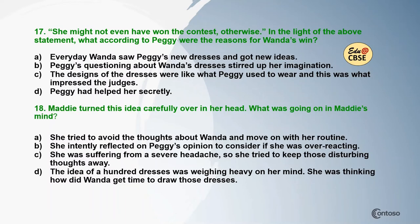Question 16: What important conclusion did Mary reach after she came back from Boggins Heights without finding Wanda there? Question 17: 'She might not even have won the contest otherwise.' In the light of this statement, what according to Peggy were the reasons for Wanda's win? Question 18: 'Medhi turned this idea carefully over in her head.' What was going on in Medhi's mind? The idea refers to the above statement — 'she might not even have won the contest otherwise' — so what did Medhi think about it?